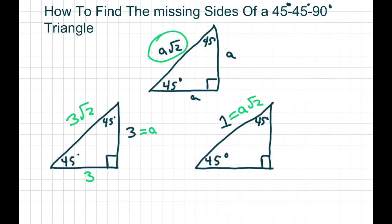So if you solve A square root of 2 equals 1, you get A equals 1 over square root of 2. If you rationalize the denominator, you get square root of 2 over 2.